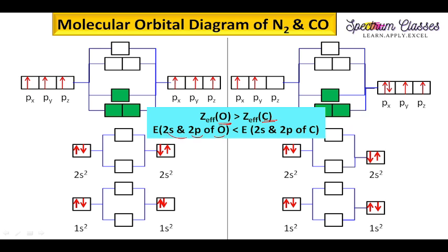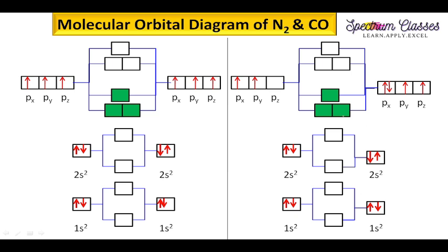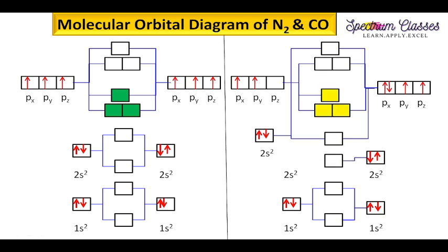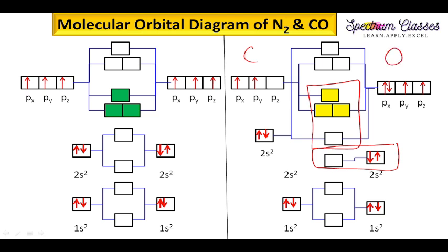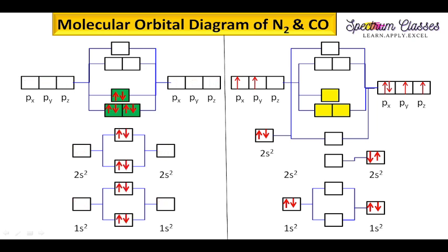Because of the high effective nuclear charge of oxygen, the energy of the 2s and 2p atomic orbitals of oxygen is less compared to those of carbon. If you are thinking that this alone is enough to draw the CO molecule's molecular orbital diagram, then you are wrong. There is a difference in the structure — particularly for the 2s orbital region — and I will explain this in the next slide.